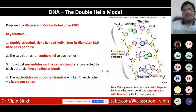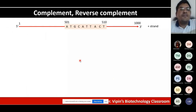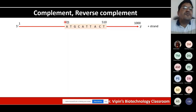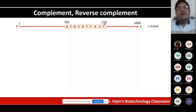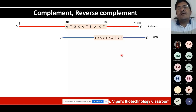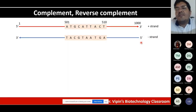Databases like the UCSC Genome Browser and NCBI store only one strand sequence to avoid redundancy — the second strand can be computationally derived. With one strand, there's no ambiguity in addressing the sequence. For example, a sequence at positions 501–510 on chromosome 1 is straightforward on the plus strand, but if a gene is on the minus strand, the polarity is opposite — 5' to 3' runs in the reverse direction.